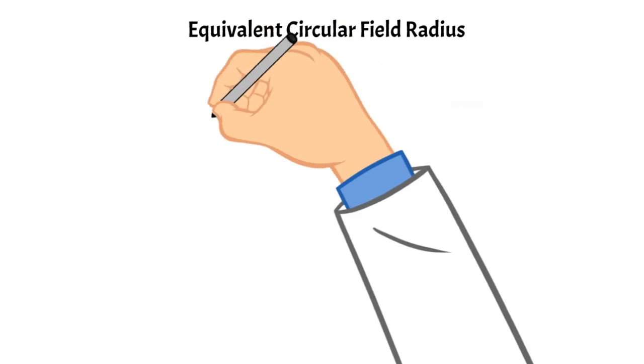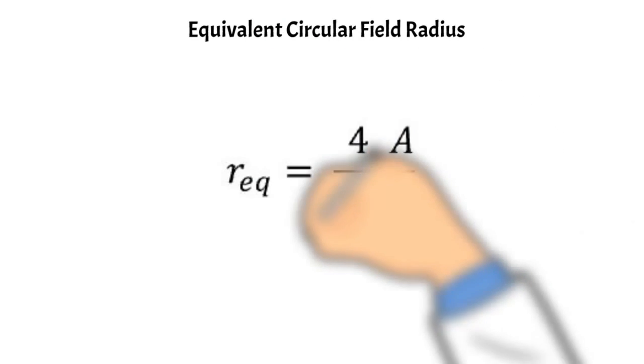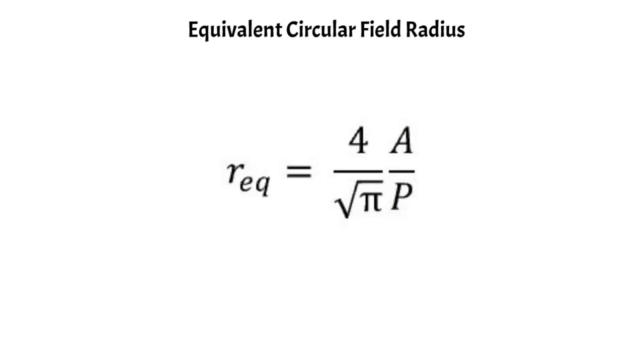I briefly mentioned that there were other ways to calculate equivalent fields, and one example is shown here with the equivalent circular field radius. Rather than getting a square field, you actually get a circular field that has the same central depth dose characteristics, and you calculate it using this equation: 4 over root pi times the area divided by the perimeter. This will give you the radius of that equivalent square field.